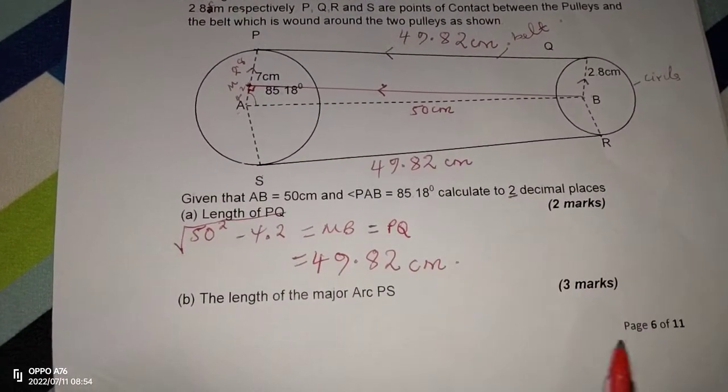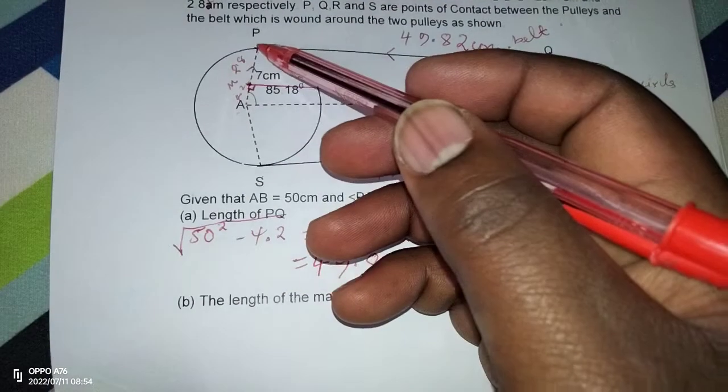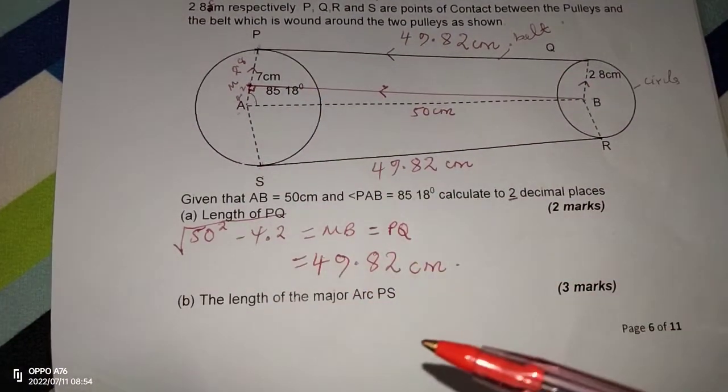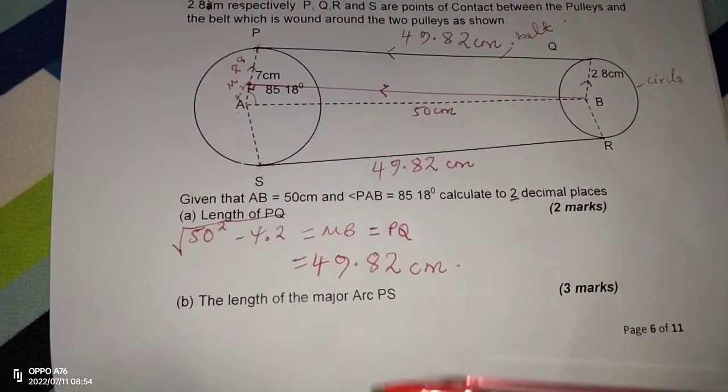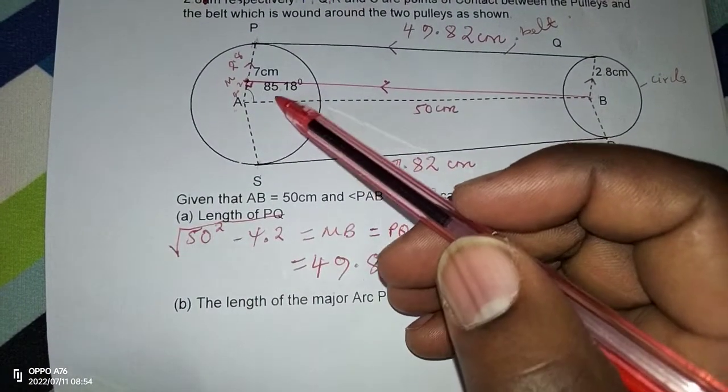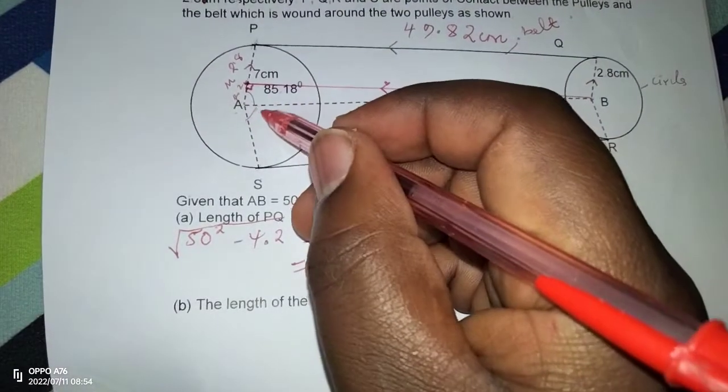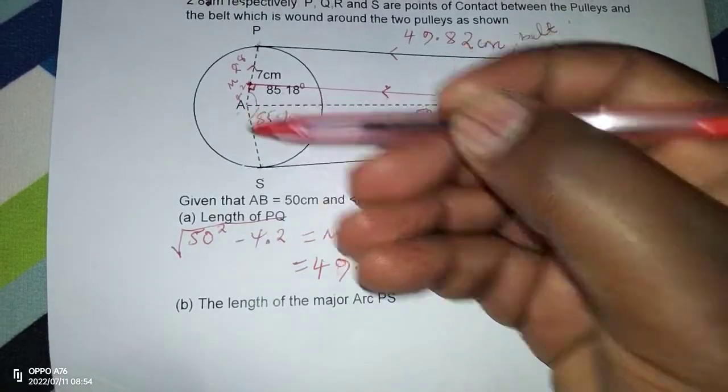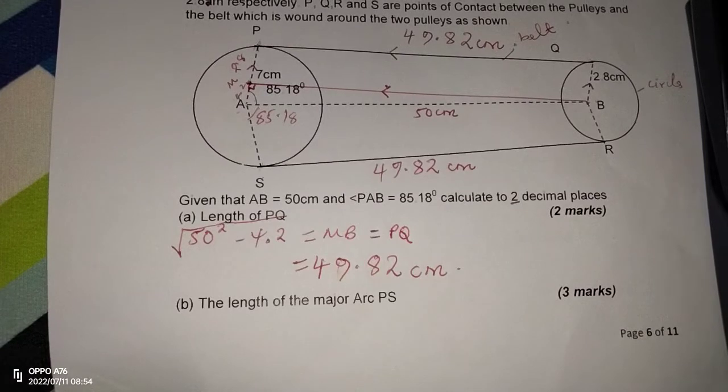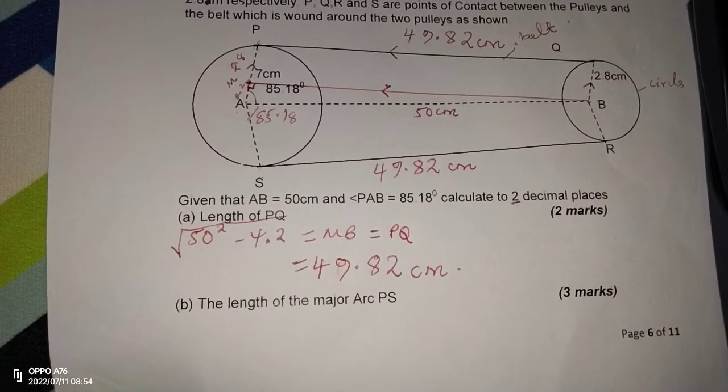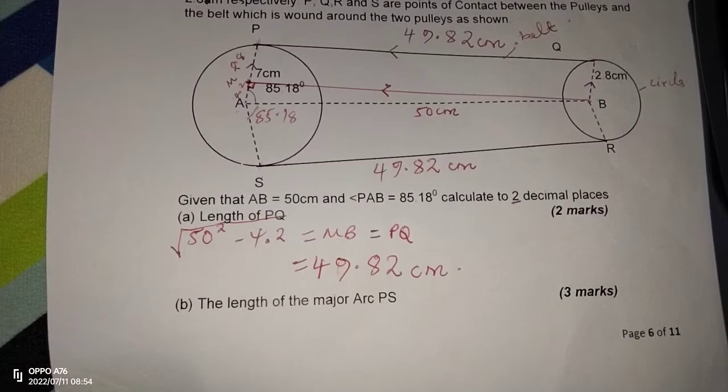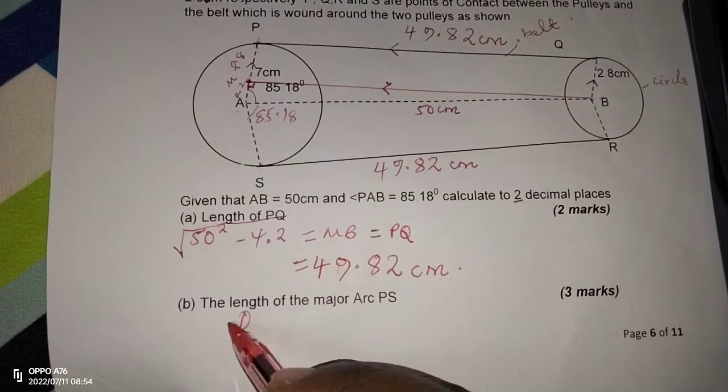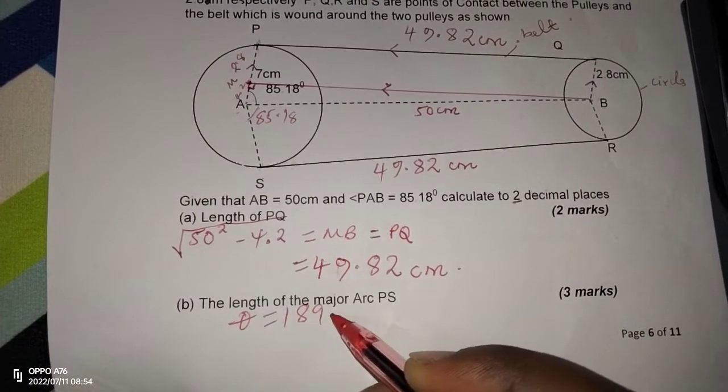So we proceed with the question. The length of the major arc PS. The major arc from P to S, that is what we call the major arc. The arc being bound by radius and the bigger angle. So now that we have 85.18°, and this other angle is also equal to 85.18°, then we can calculate the outer angle on this other side by taking 360 and we subtract 2 multiplied by 85.18. So this is going to give us 189.64°. So the angle is going to be 189.64°.